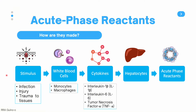How are acute phase reactants made? Whenever we encounter a stimulus like infection, injury, or traumatic tissues, cells at the site of the stimulus — most notably monocytes and macrophages — produce cytokines. These are chemical signals that travel across the body to stimulate an immune response. Notable cytokines involved include interleukin-1-beta, interleukin-6, and tumor necrosis factor alpha. These cytokines travel through the bloodstream to hepatocytes in the liver, which are responsible for producing acute phase reactants.